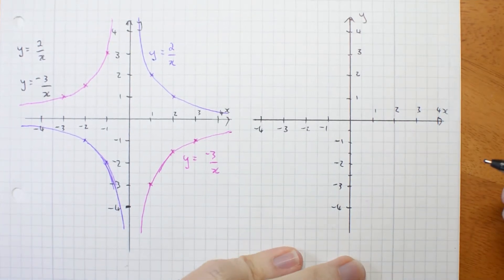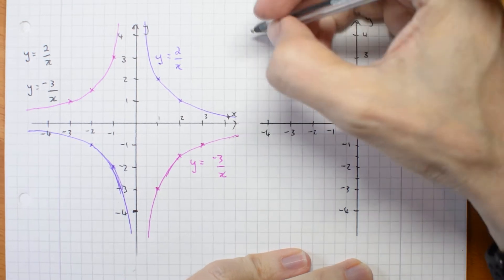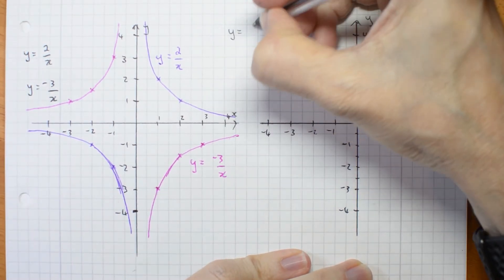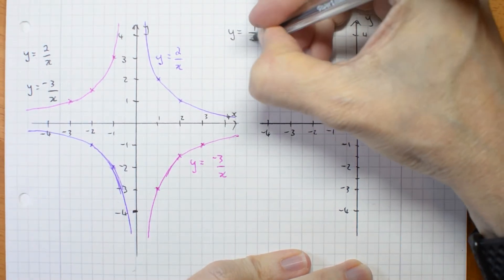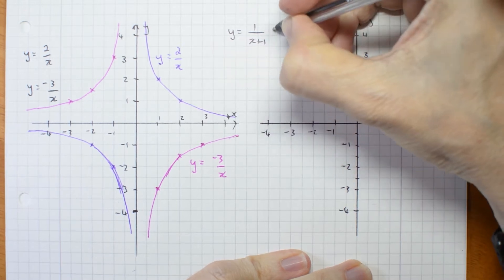Now I'm going to try and sketch a hyperbola that's been shifted. y equals 1 over x plus 1 plus 2.